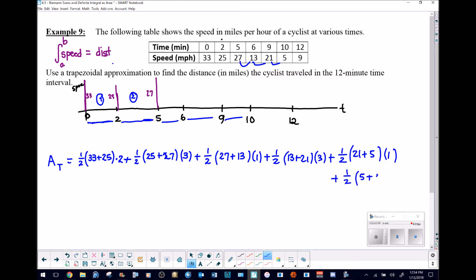Now the rest of this is just slightly aggravating arithmetic. I do know that we have a one half that we could factor out, that's going to make things a little easier. So let's run through this. If we have 33 plus 25 that would be a 58 and we still multiply by a 2. 25 and 27 would be 52 that would be multiplied by a 3.